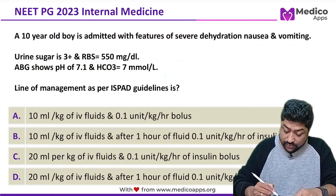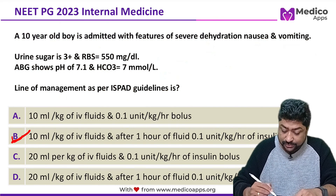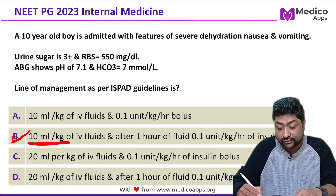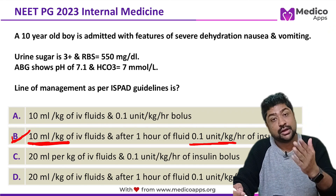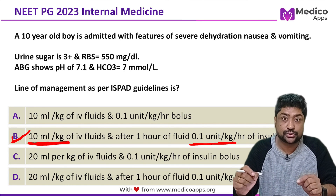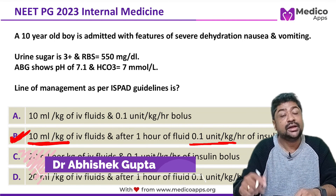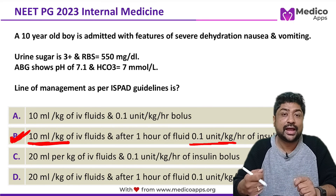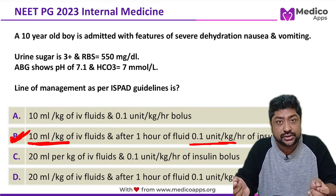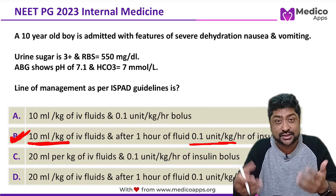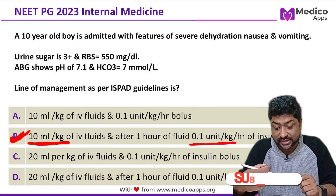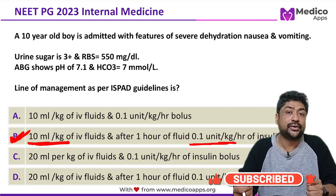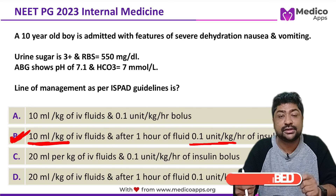The correct answer is B: give 10 ml/kg IV fluid, and only after one hour start insulin at 0.1 unit/kg/hr. DKA is a very important topic for NEET PG and INICET exams. If you're watching on YouTube, subscribe and hit the bell notification for this daily MCQ video series.